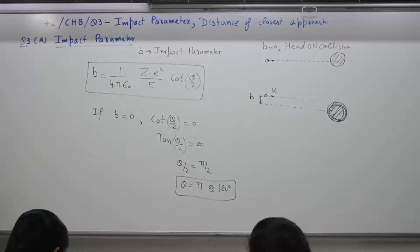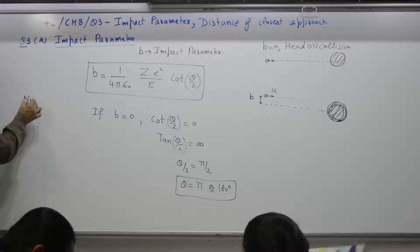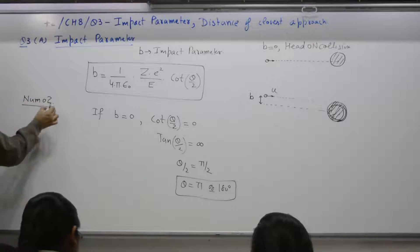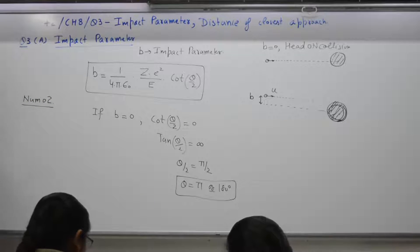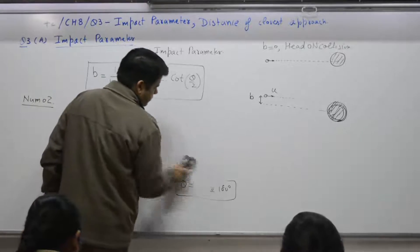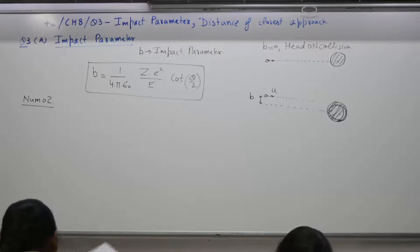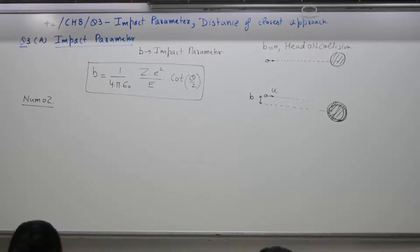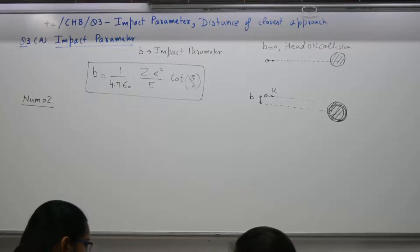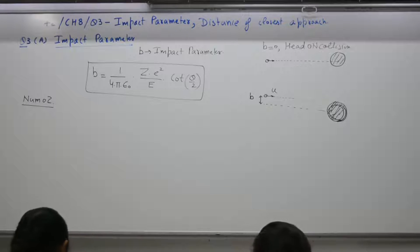Refer to numerical number 2, page 8 by 32. Numerical is, an alpha particle is scattered through an angle of 10 degree on passing through a thin foil of copper, Z equal to 29. If energy of the particle is 5 mega electron volt, what is impact parameter?